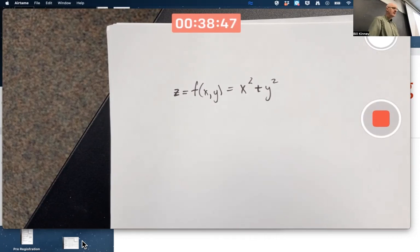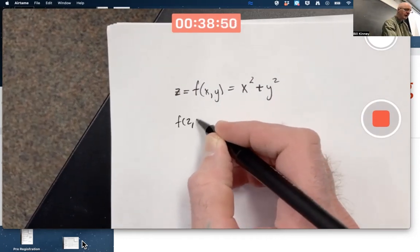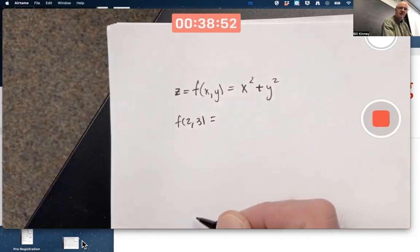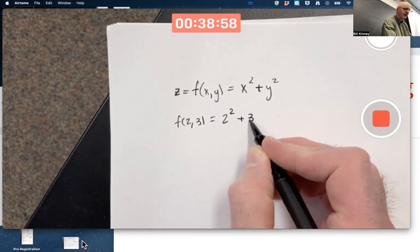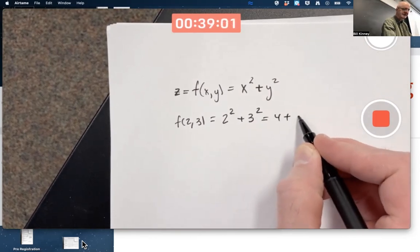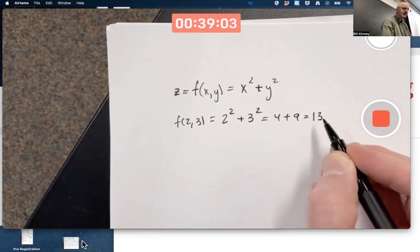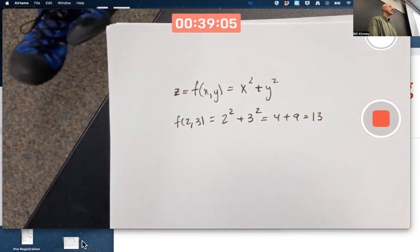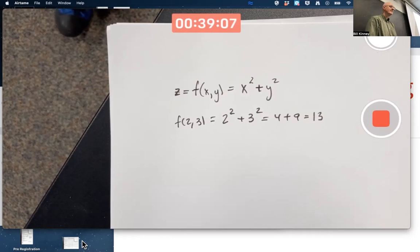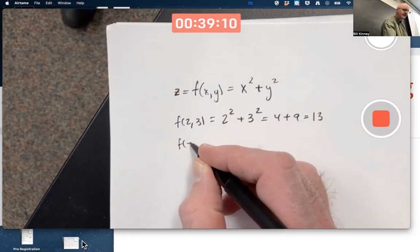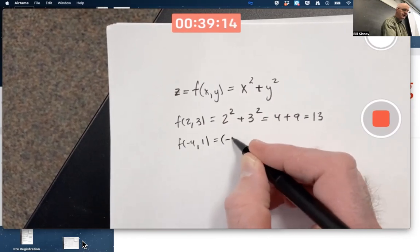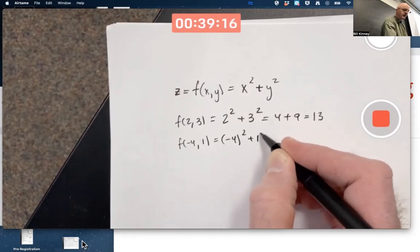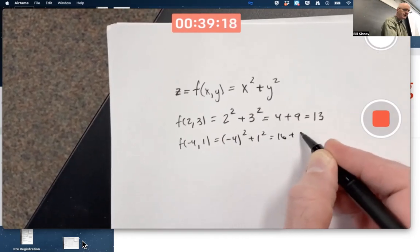So for example, if X is 2 and Y is 3, what is Z? It's what I get when I replace X with 2 and I replace Y with 3. 4 plus 9 is 13. If X is 2 and Y is 3, Z is 13. If X is negative 4 and Y is 1, I get negative 4 squared plus 1 squared is 16 plus 1 is 17.